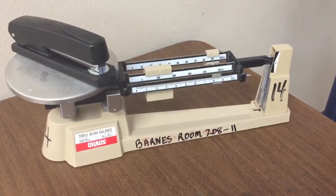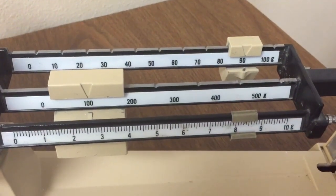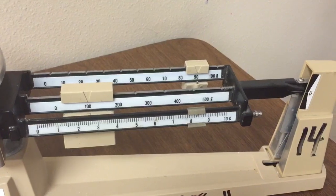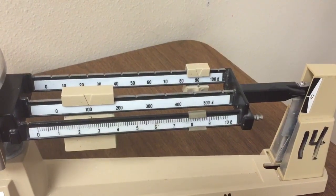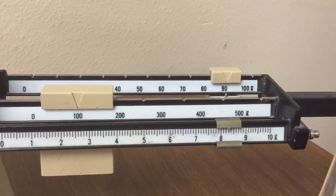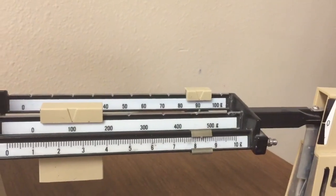Now we're going to measure a stapler. I want you to measure this on your own and read the triple beam balance. Don't forget to start with the hundreds, then move to the tens, and then to the ones. And make sure that you focus on the tenths. While you're reading this, if you need to pause the video, please do so.